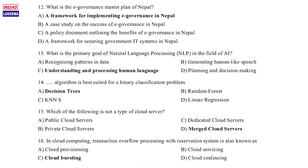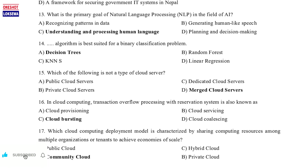Question 15: Which of the following is not a type of cloud server? a. Public cloud servers, b. Private cloud servers, c. Dedicated cloud servers, d. Merged cloud servers. Question 16: In cloud computing, transaction overflow processing with reservation system is also known as: a. Cloud provisioning, b. Cloud servicing, c. Cloud bursting, d. Cloud coalescing.